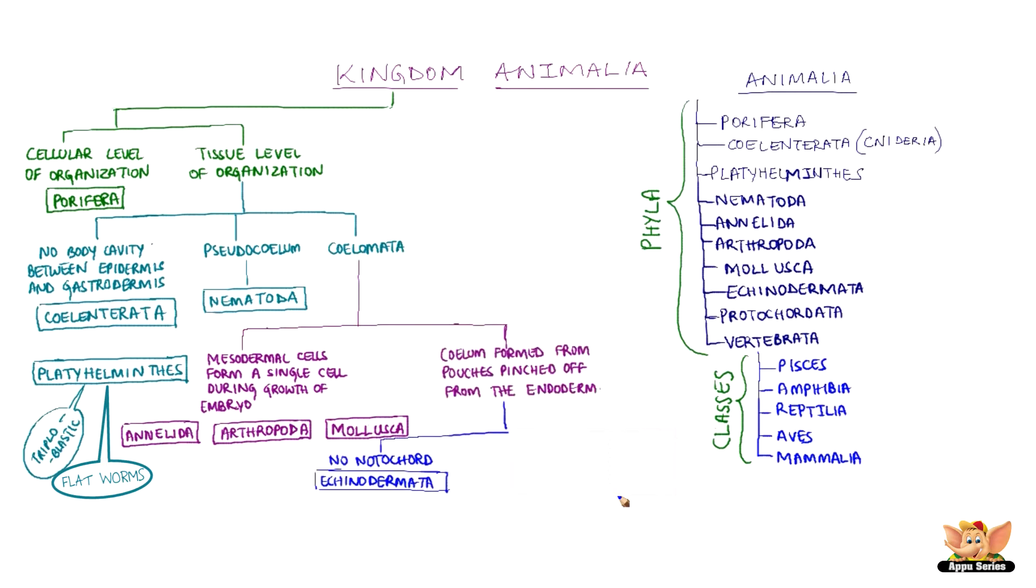Echinodermata: Echinos in Greek means hedgehog and derma means skin. These organisms have spiny skin. Notochord is a long rod-like support structure that runs along the back of the animal separating the nervous tissue. Organisms of Echinodermata do not have a notochord. They have hard calcium carbonate structures which is a skeleton. Starfish, sea cucumber, and sea urchin are examples of this phylum.